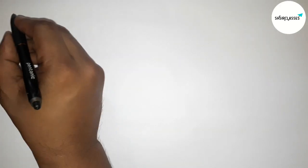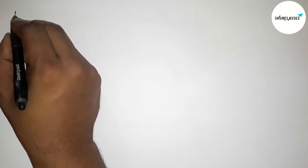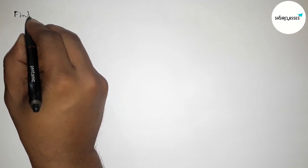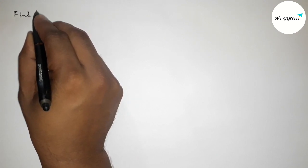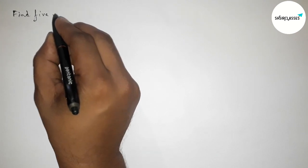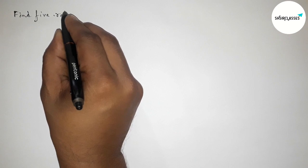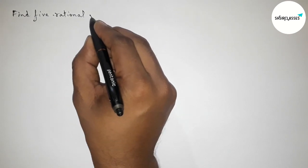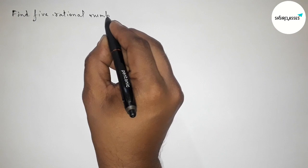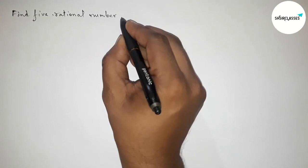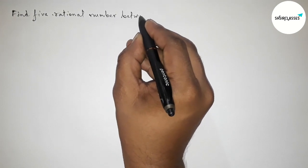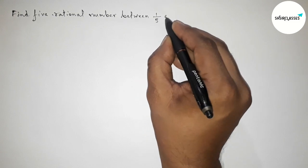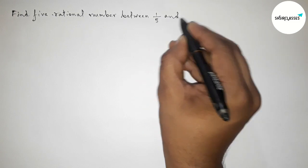Hi everyone, welcome to SI Share Classes. Today in this video we have to find five rational numbers between 1/5 and 1/3 in an easy way. Please watch the video till the end. Let's start.